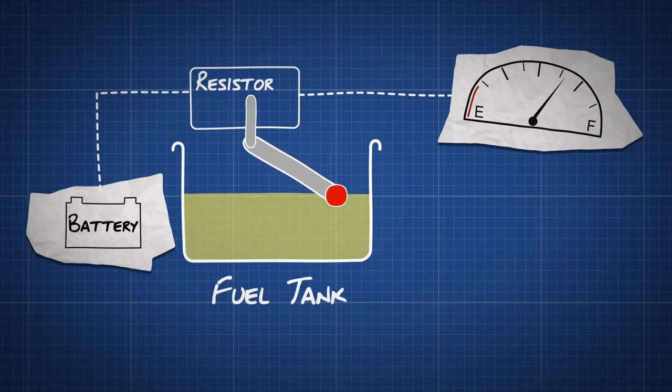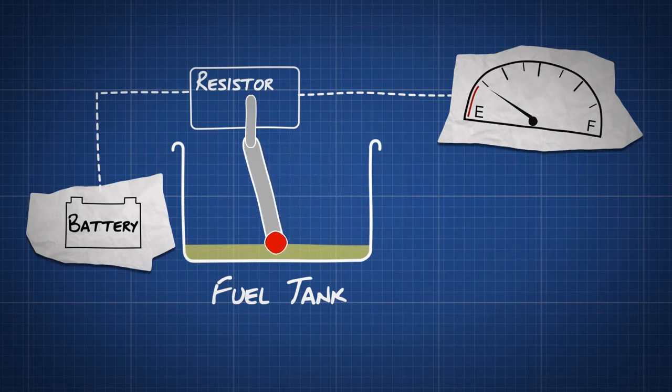The lower the float drops, the more current the resistor sends to the fuel gauge, and the closer your gauge gets to empty.